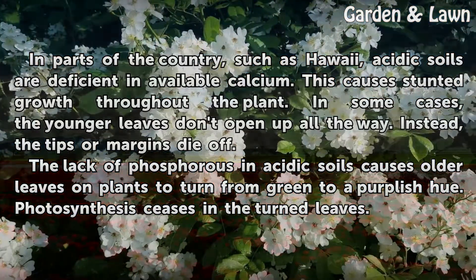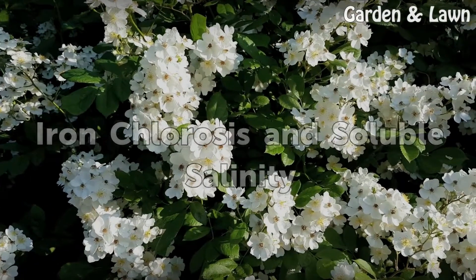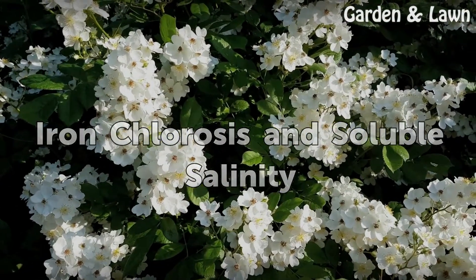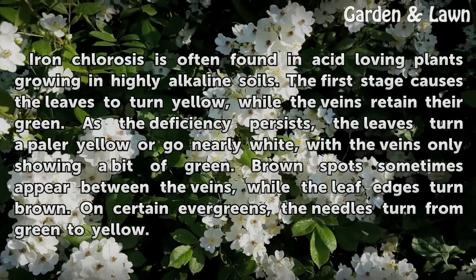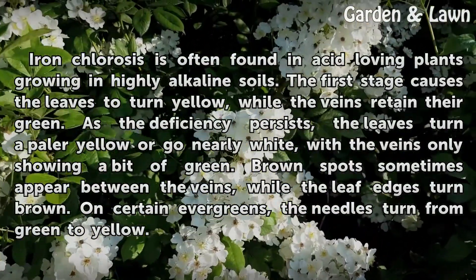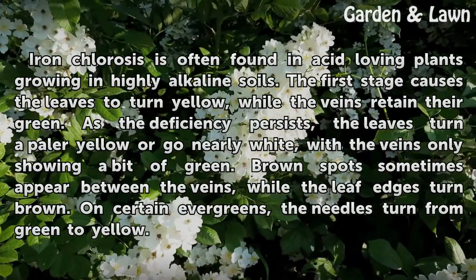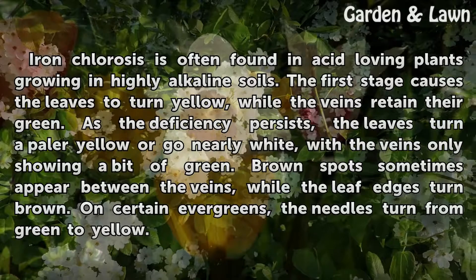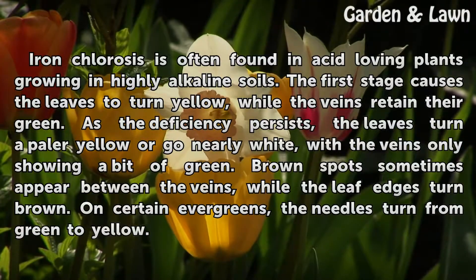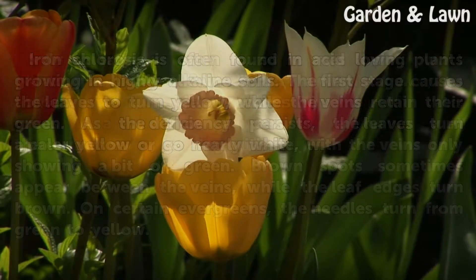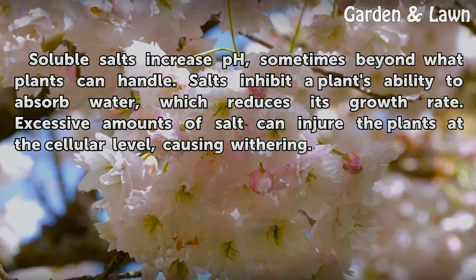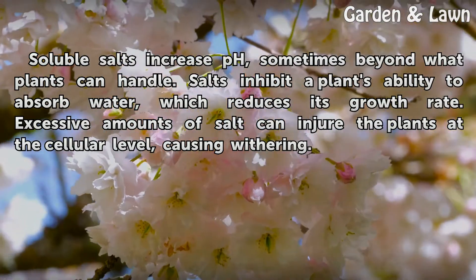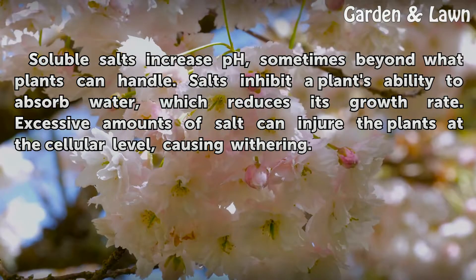The lack of phosphorus in acidic soils causes older leaves on plants to turn from green to a purplish hue. Photosynthesis ceases in the turned leaves. Iron chlorosis is often found in acid-loving plants growing in highly alkaline soils. The first stage causes the leaves to turn yellow while the veins retain their green. As the deficiency persists, the leaves turn a paler yellow or go nearly white, with the veins only showing a bit of green. Brown spots sometimes appear between the veins, while the leaf edges turn brown. On certain evergreens, the needles turn from green to yellow. Soluble salts increase pH, sometimes beyond what plants can handle. Salts inhibit a plant's ability to absorb water, which reduces its growth rate. Excessive amounts of salt can injure the plants at the cellular level, causing withering.